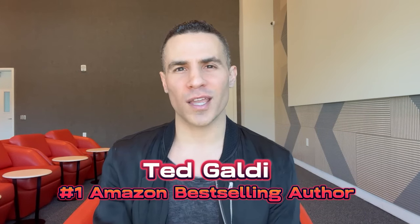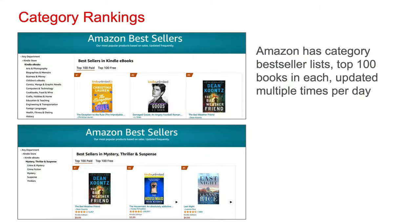Amazon uses a lot of sophisticated technology to determine and update its bestseller charts, but the underlying principles these charts are based on are pretty simple. Amazon has category bestseller lists which feature the top 100 books in each category. These lists are updated multiple times per day as new sales information comes in.